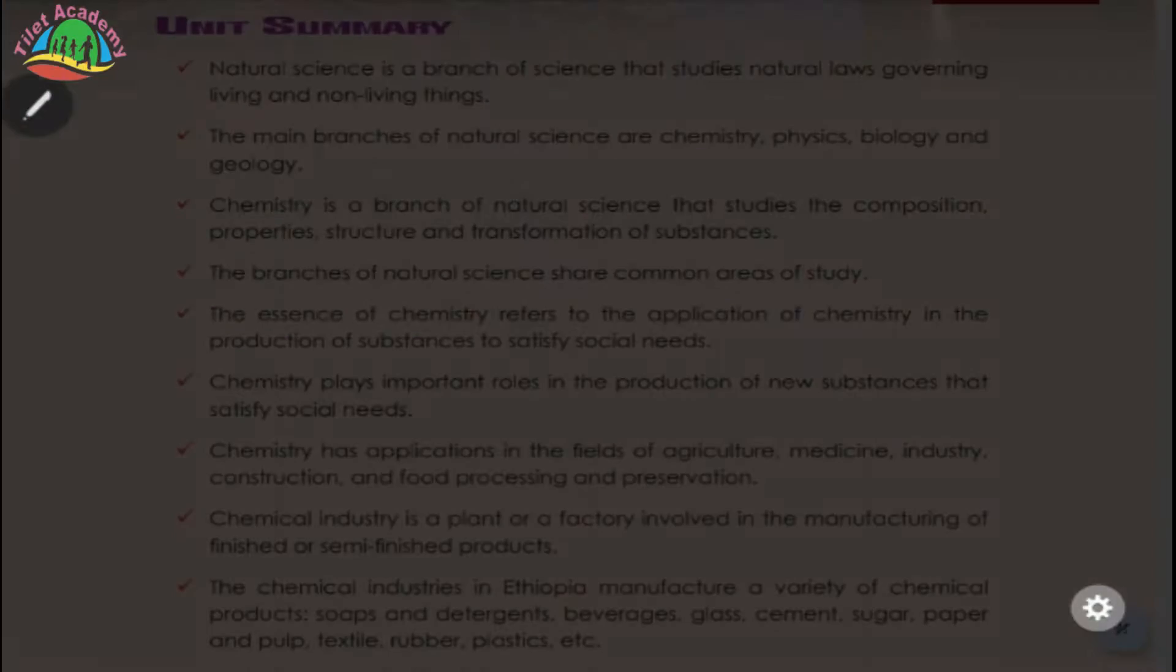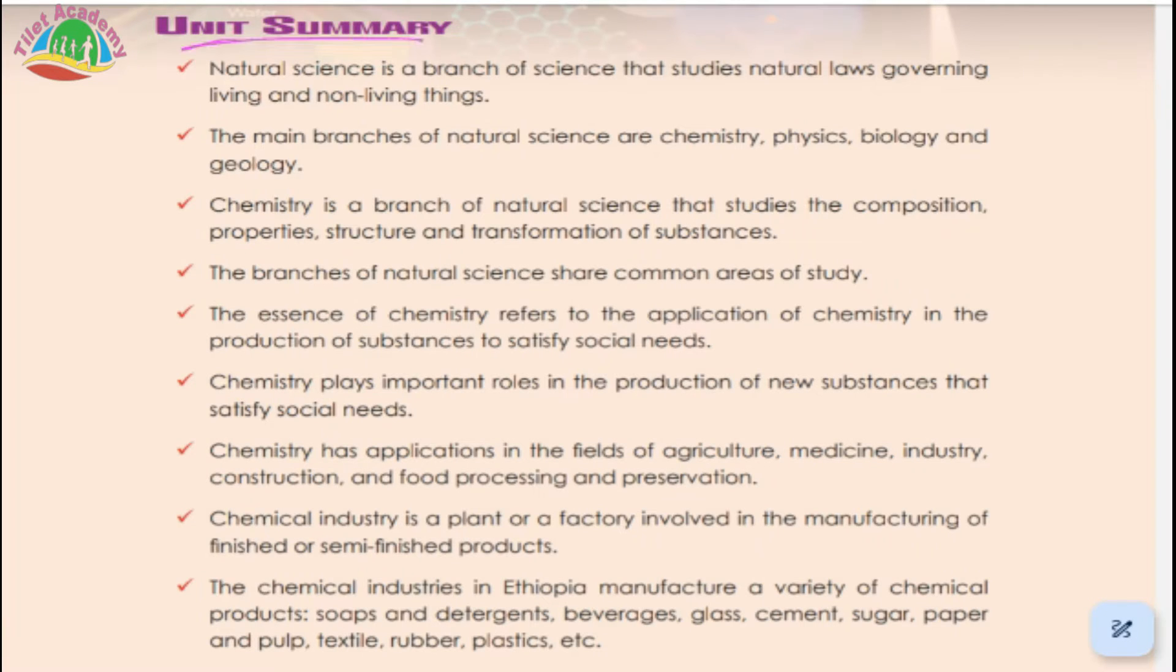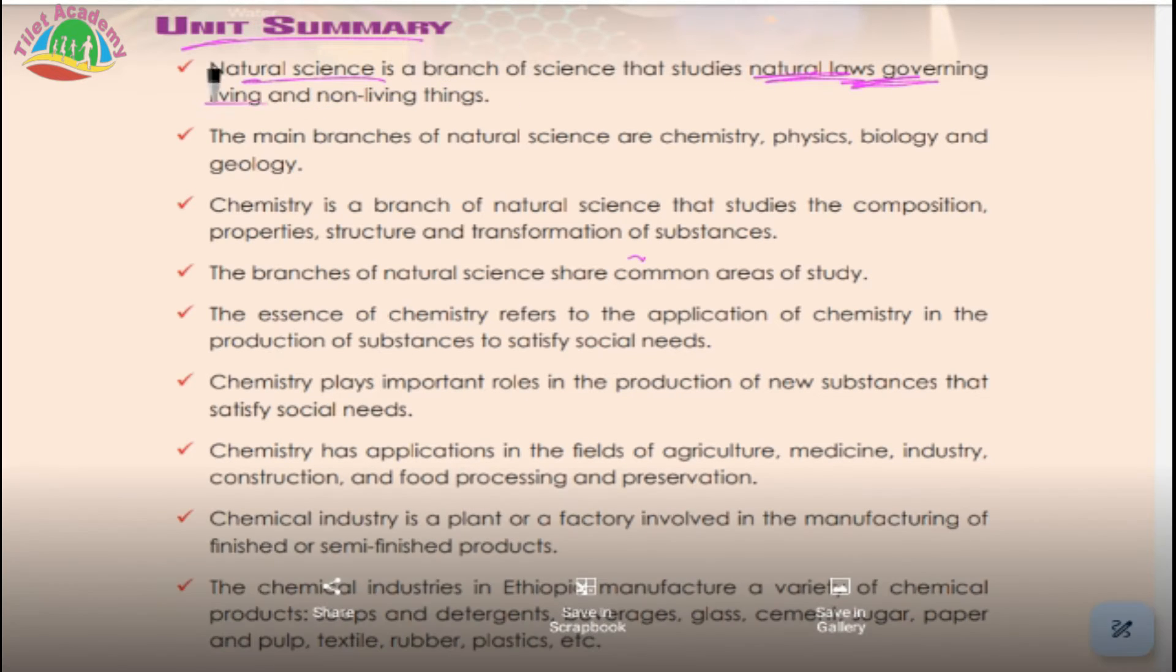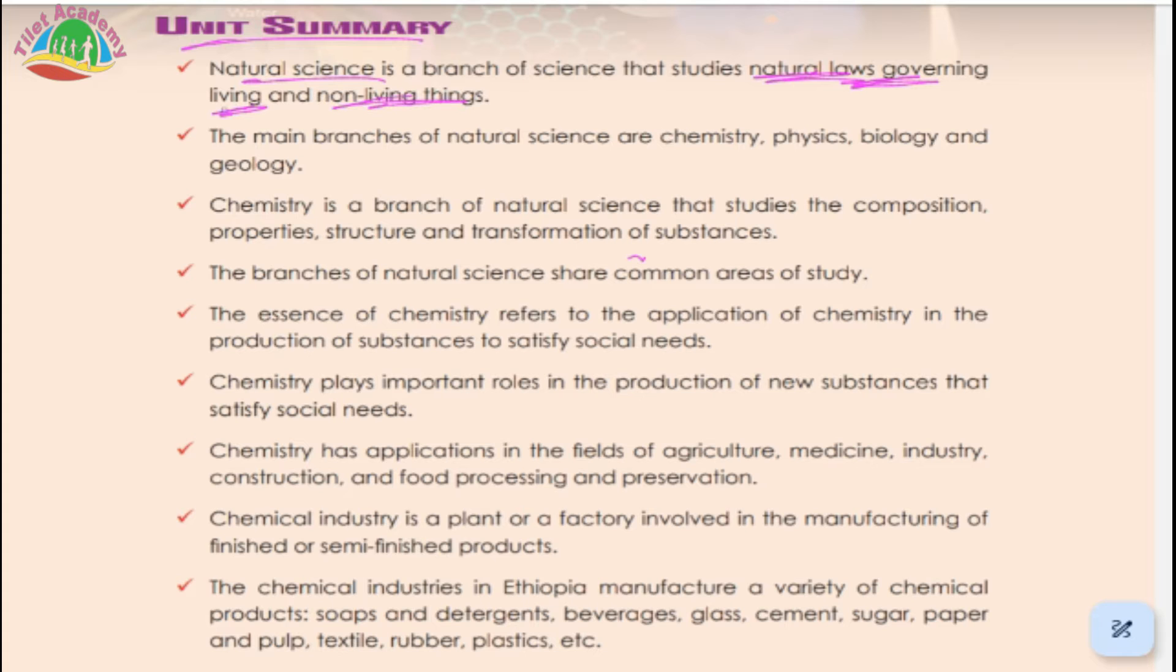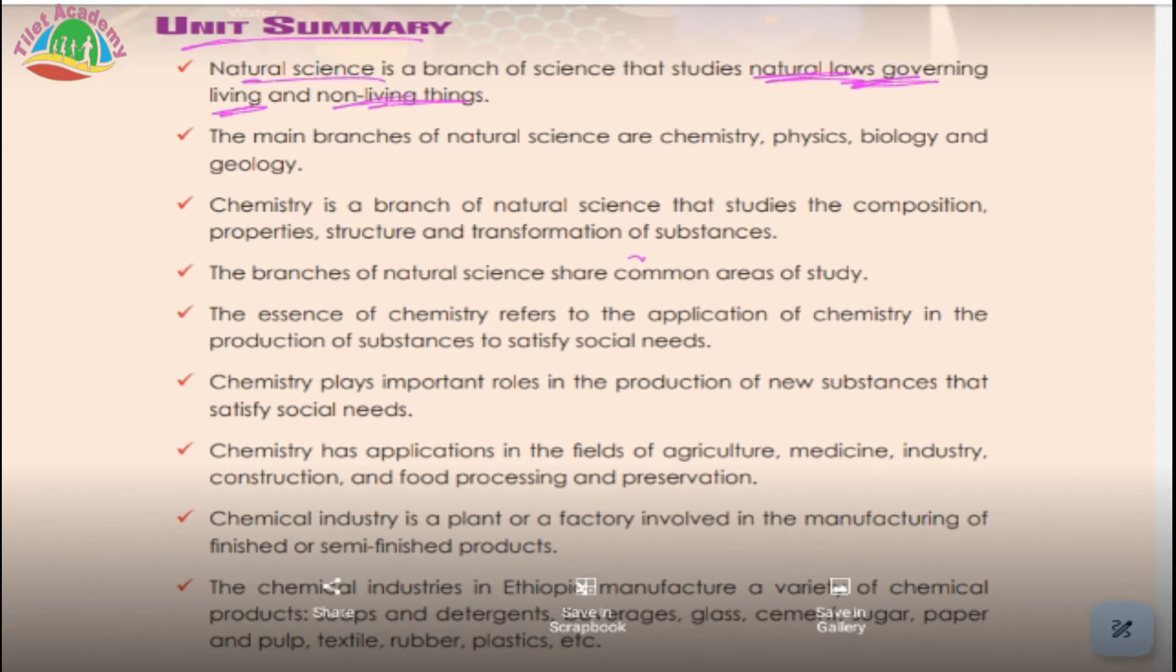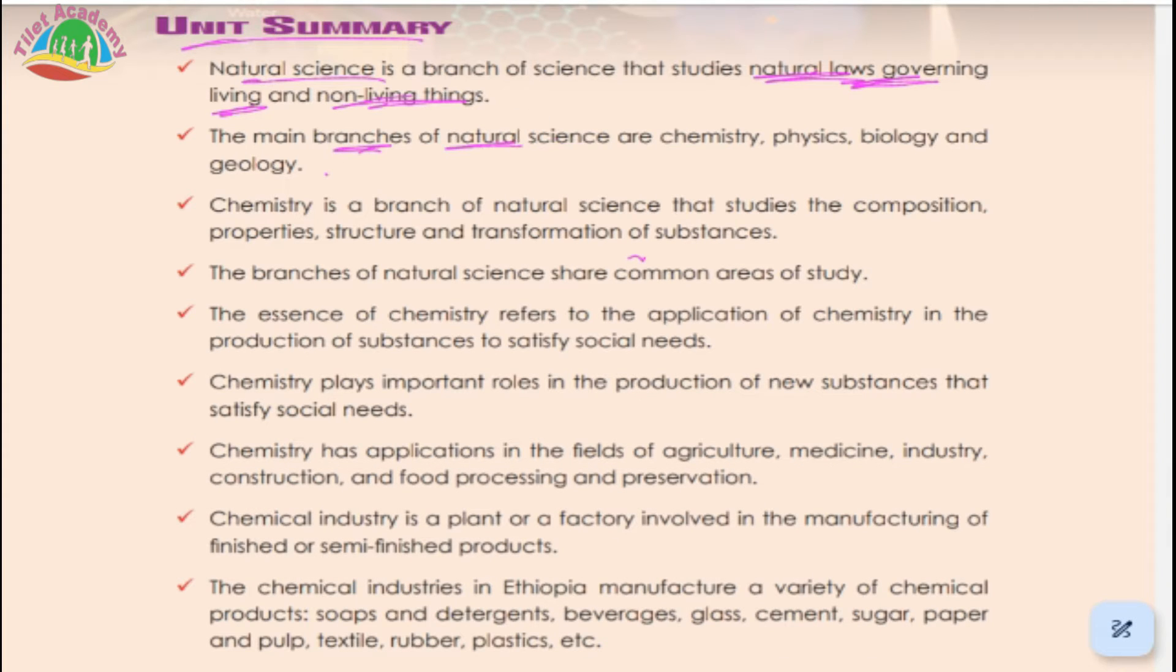Here is the summary. Natural science is a branch of science that studies natural laws governing living and non-living things. The main branches of natural science are chemistry, physics, biology, and geology. Chemistry is a branch of natural science that studies composition, property, structure, and transformation of substances.